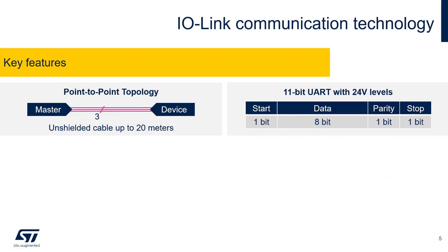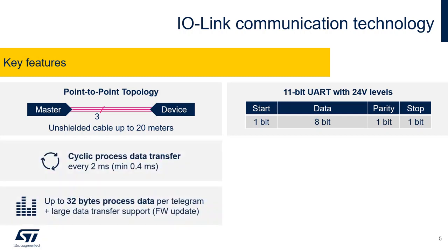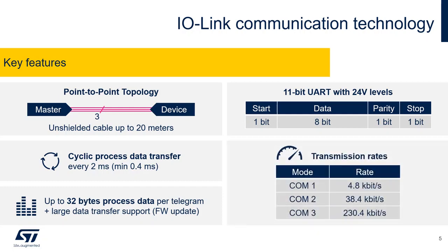The technology is based on a point-to-point communication between the IO-Link master and connected IO-Link devices. It uses a standard unshielded cable for industrial sensors to transfer binary data in the form of 11-bit UART frames using 0–24 volts logic. IO-Link allows transfer of process data at a cycle rate as short as 400 microseconds. Every cycle telegram can carry up to 32 bytes of process data and the protocol supports also large data transfers. The communication runs at one of three transmission rates depending on the capability of the connected device, from 4.8 to 230.4 kilobits per second.